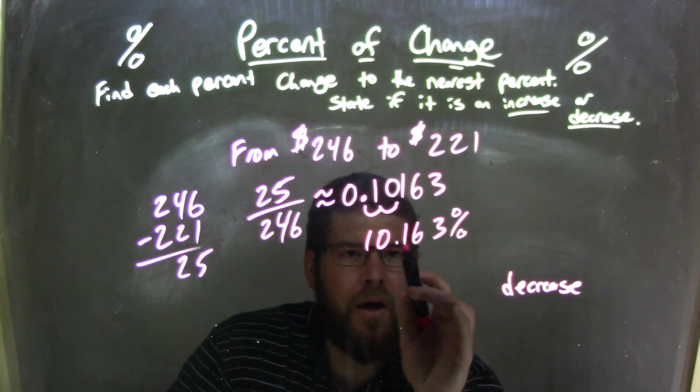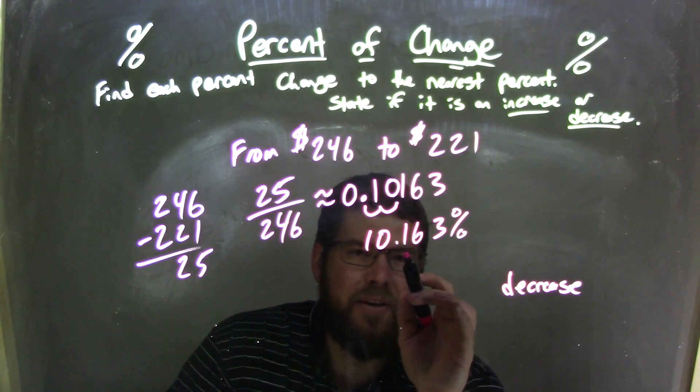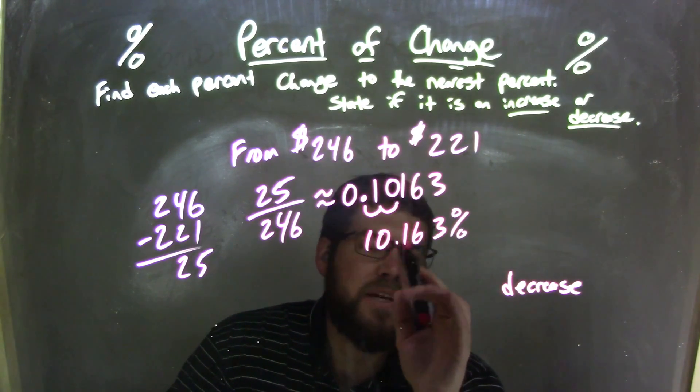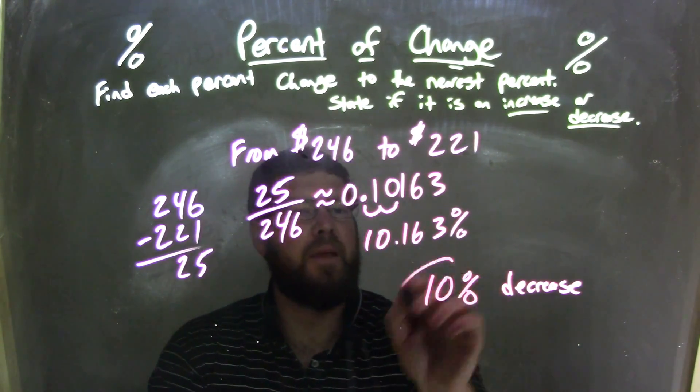affects the 0 right here. And since 1 makes it round down, that 10 just stays as 10. So we actually have a 10 percent decrease here. That's our final answer.